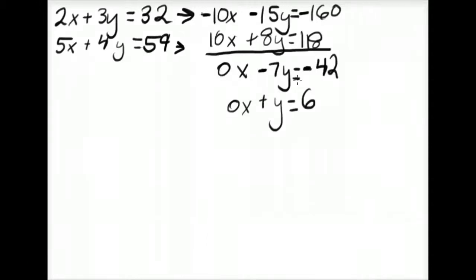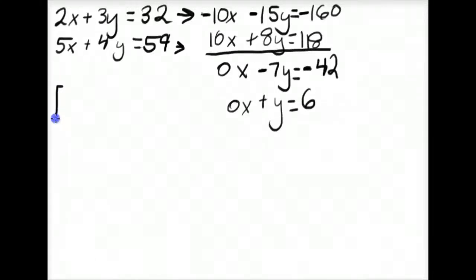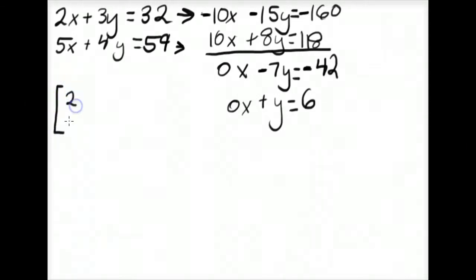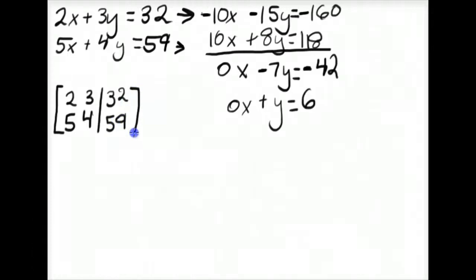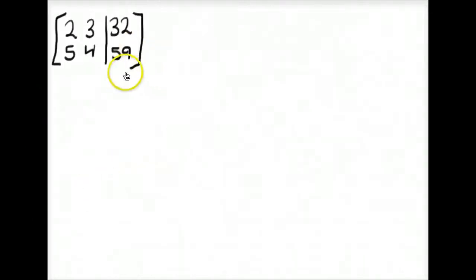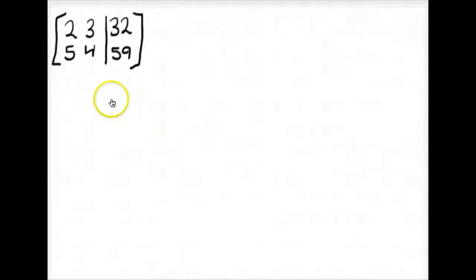We're going to write the system as a matrix with a bracket, writing the coefficients exactly in the order they appear. So it's going to be 2, 5, then 3, 4. We indicate where the constants are with a vertical line, and this will be 32, 59. So this is the augmented matrix. Now that we have the system written concisely as a matrix, operations can be performed on the matrix itself, just as they were for the system above.